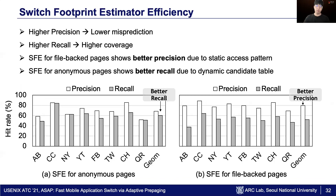Finally, we evaluate the accuracy of SFE. The left graph shows precision and recall of SFE for anonymous pages, and the other shows SFE for file-backed pages. Here, higher precision means lower misprediction rate, and higher recall means higher coverage. SFE for file-backed pages shows better precision due to the static access pattern of file-backed pages. However, SFE for anonymous pages shows better recall due to the runtime update of the dynamic candidate table.